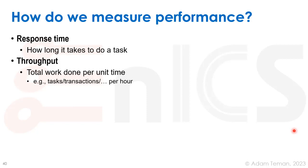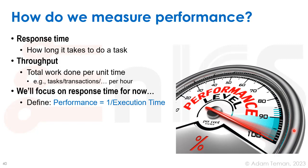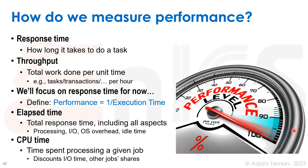Throughput is often more important than how long it takes to do one single task. However, right now we're just going to focus on response time. So let's define performance as one divided by execution time. When we discuss elapsed time, we have to look at two factors: total response time, which includes all aspects of execution including processing, I/O operations, OS overhead, and idle time, versus CPU time, which is just the time spent processing a given job.